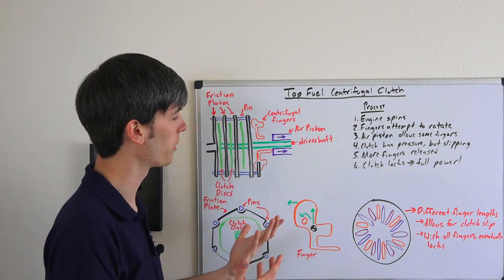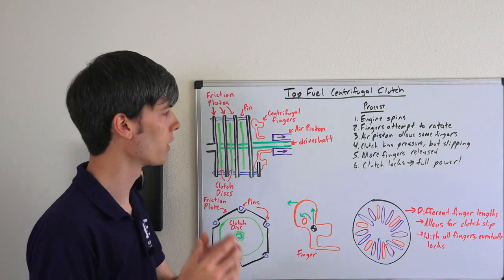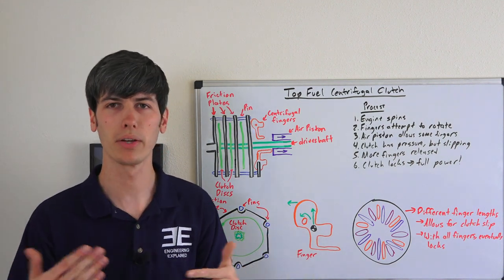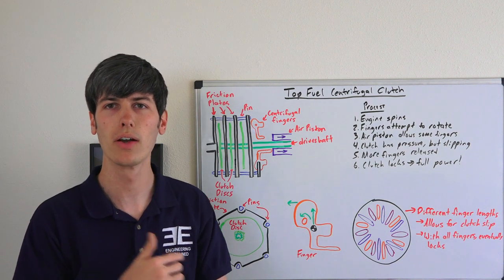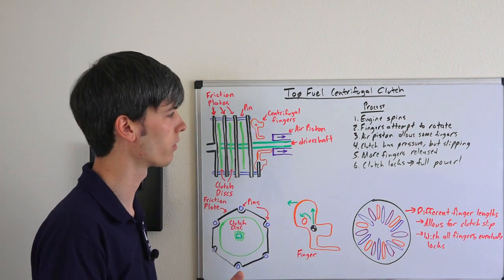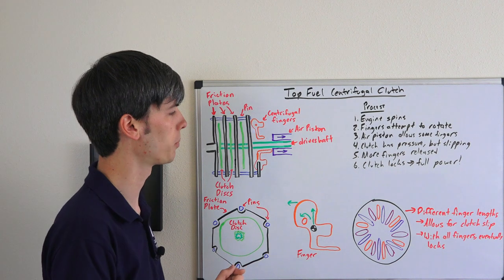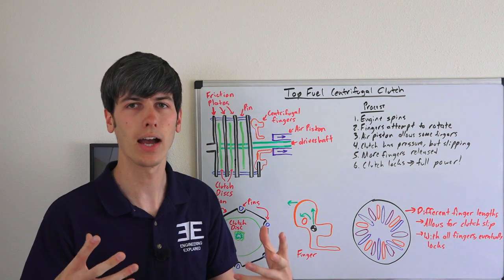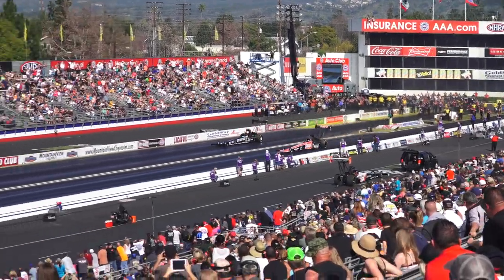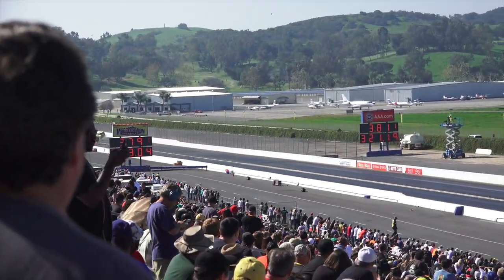The clutch pack will lock up, you've got full power headed to the rear wheels, and by that point you're maybe halfway down the track or so and you're applying the rest of your power hoping to get a little bit more speed. But most of that time comes from the very beginning of the run where you want to get to speed very quickly, and that's all done through clutch slip.